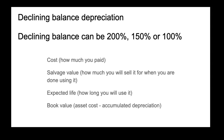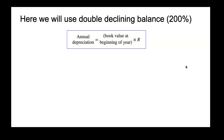For declining balance depreciation, the rate can be 100%, 200%, or 150%. We'll calculate using double declining balance. The inputs are the same as before, but instead of cost we use book value — and at the beginning of year one, book value is most likely the cost since nothing has been depreciated yet. The formula takes the book value at the beginning of the year multiplied by the depreciation rate R.